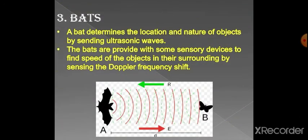The Doppler effect is used by bats. A bat determines the location and nature of objects by sending ultrasonic waves. Bats are provided with sensory devices to find the speed of objects in their surroundings by sensing the Doppler frequency shift.